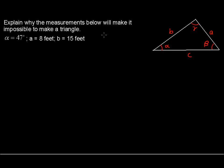Explain why the measurements below will make it impossible to make a triangle. Alpha is 47 degrees, side A is 8 feet, and side B is 15 feet.